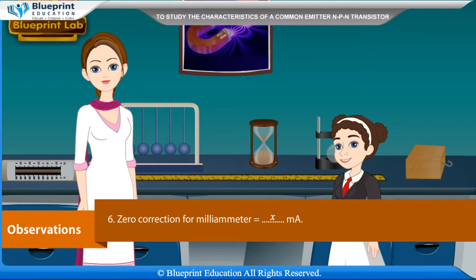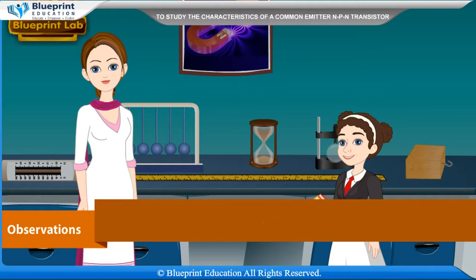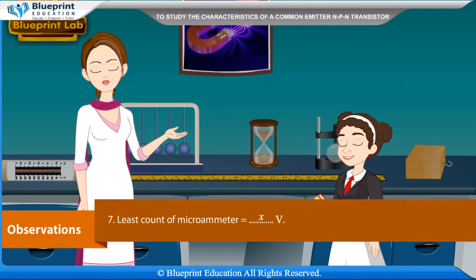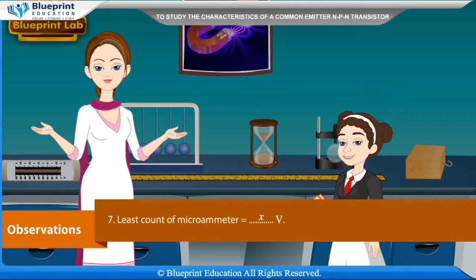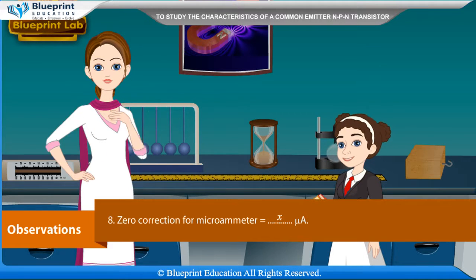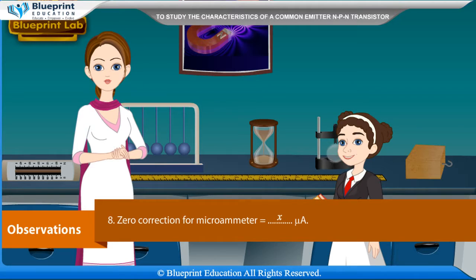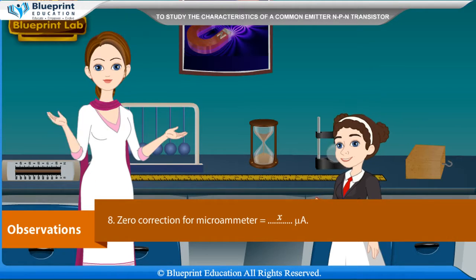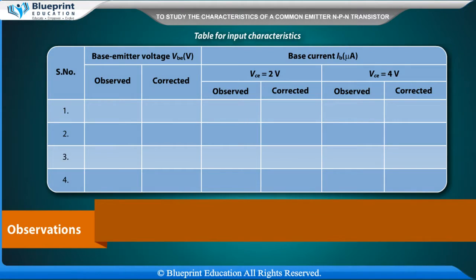Least count of micro-ammeter is equal to X volt. Zero correction for micro-ammeter is equal to X micro-ampere. Table for input characteristics: Serial number.